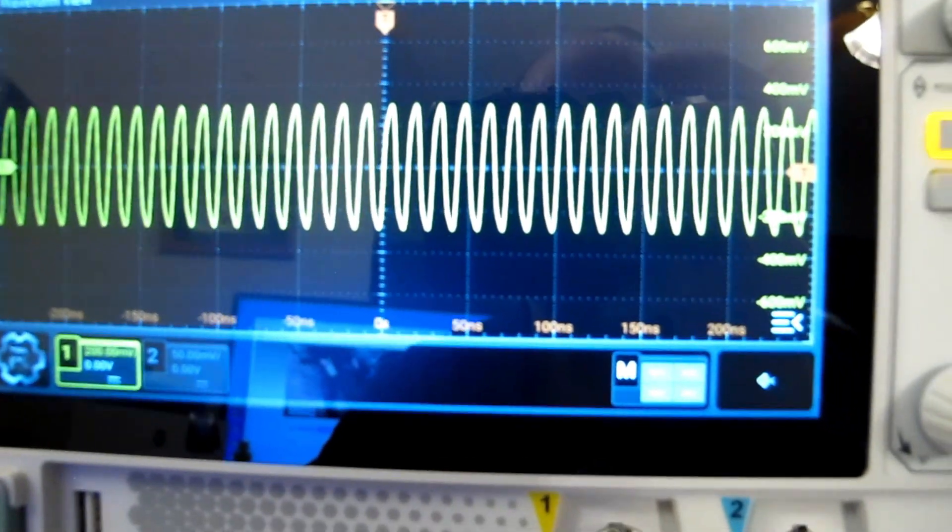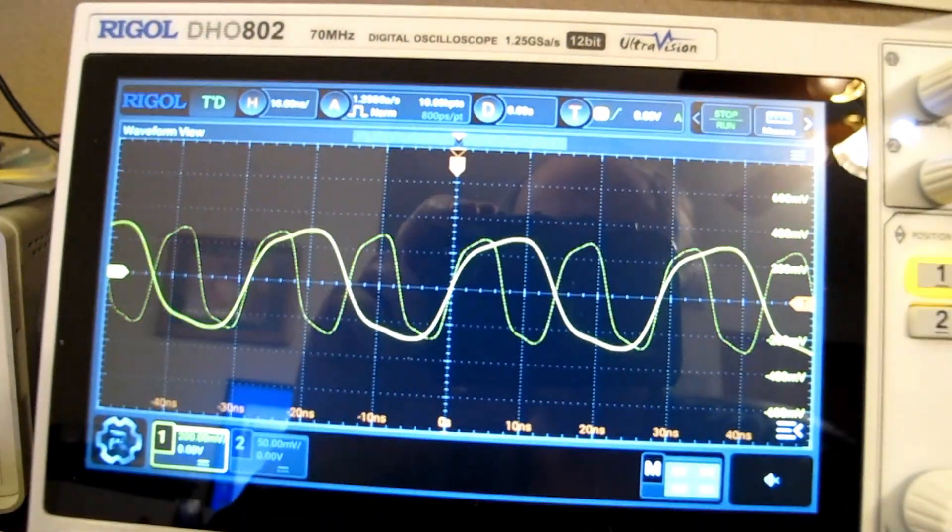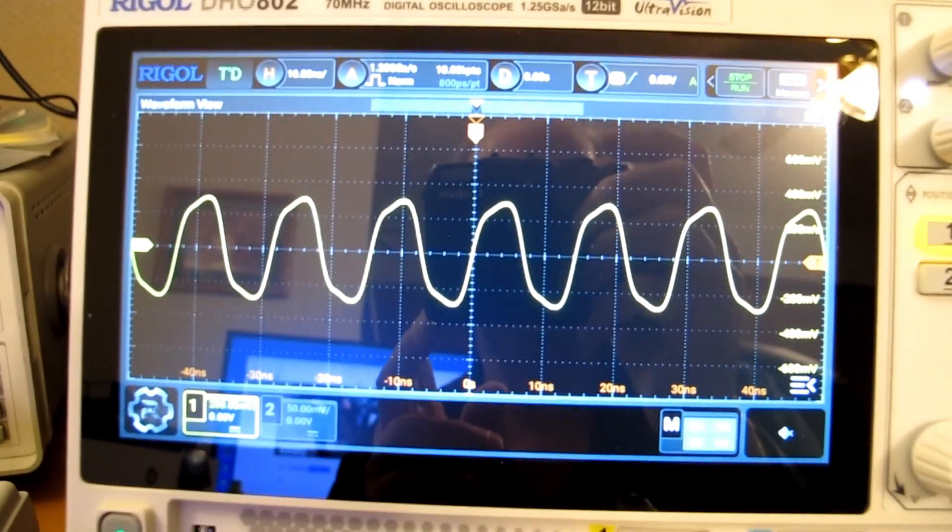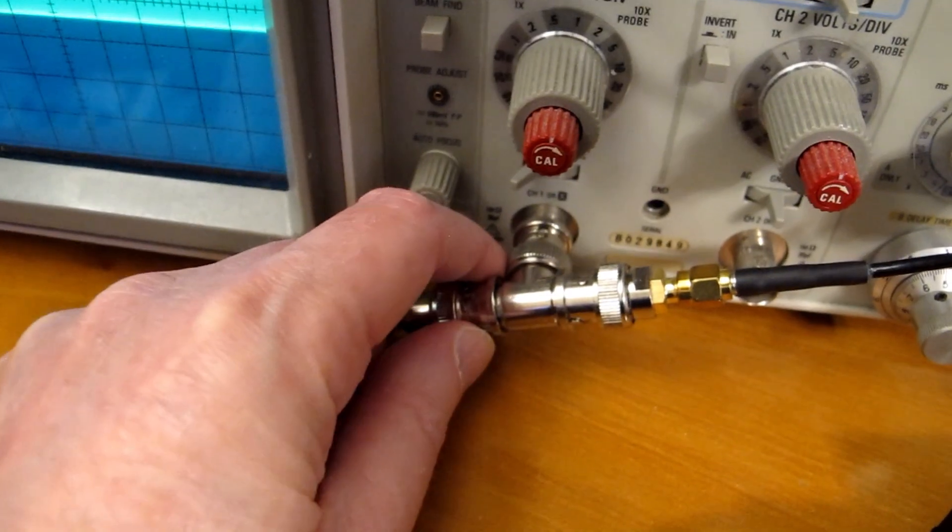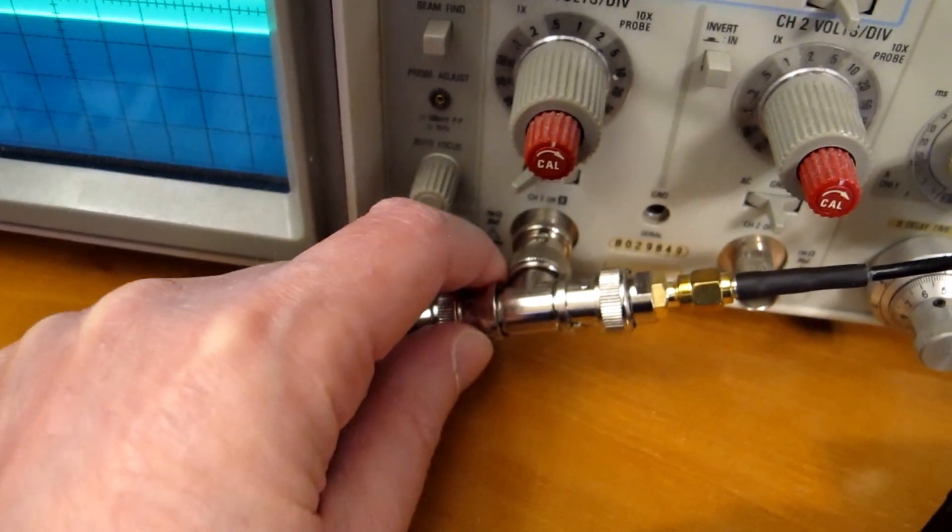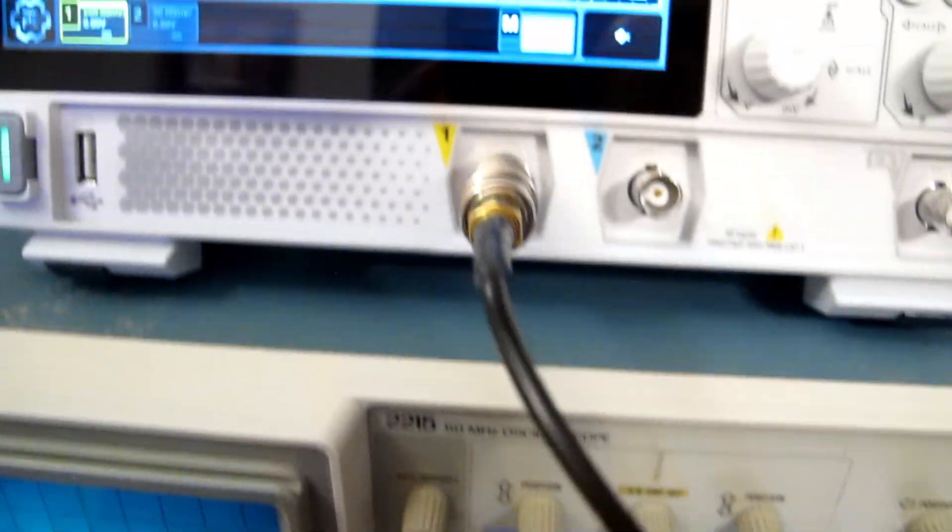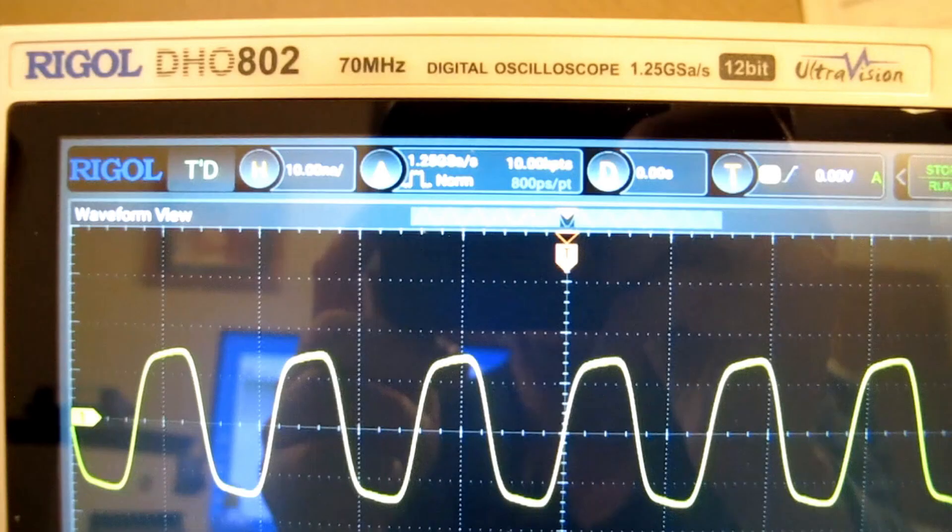There it is, still there, same amplitude. If I run the horizontal out, you can see it still looks kind of squarish. If I pull the loading off—there's some capacitive loading in here—so if I pull that off, the signal goes straight into the new scope. It's even better. That is a 70 megahertz square wave on a so-called 70 megahertz scope.